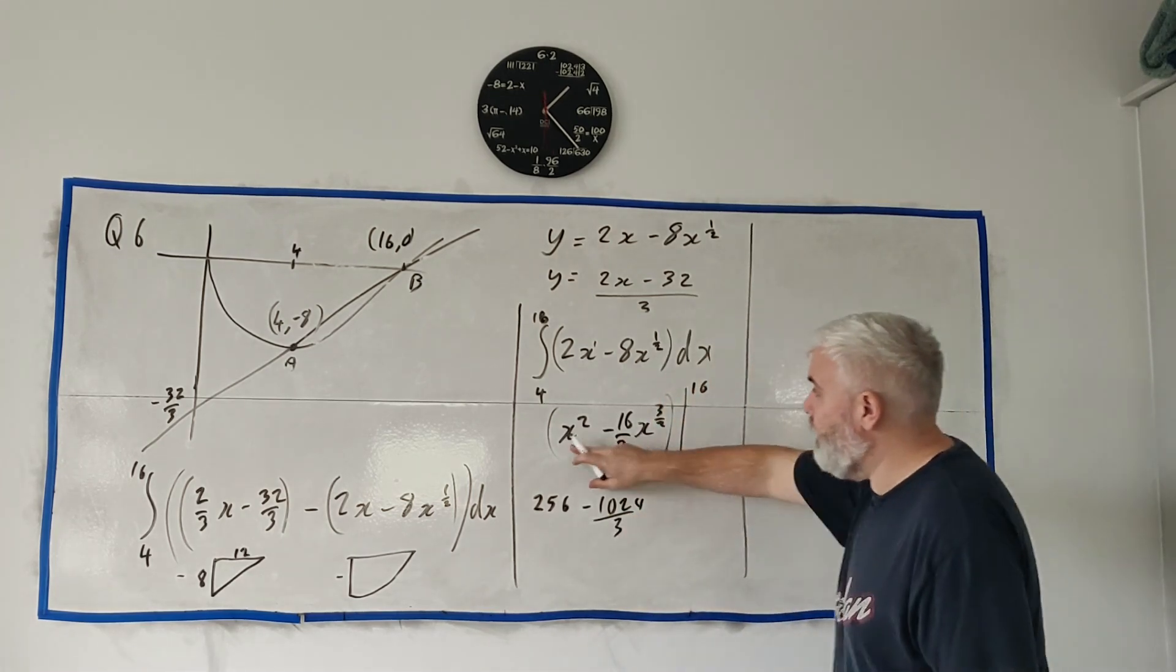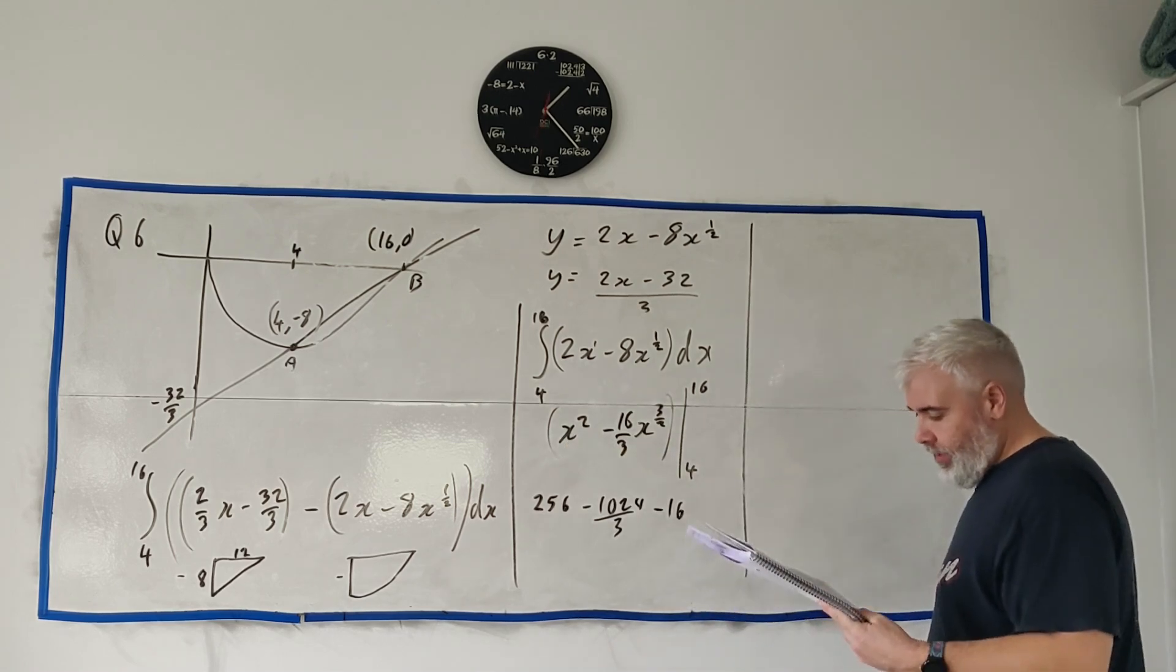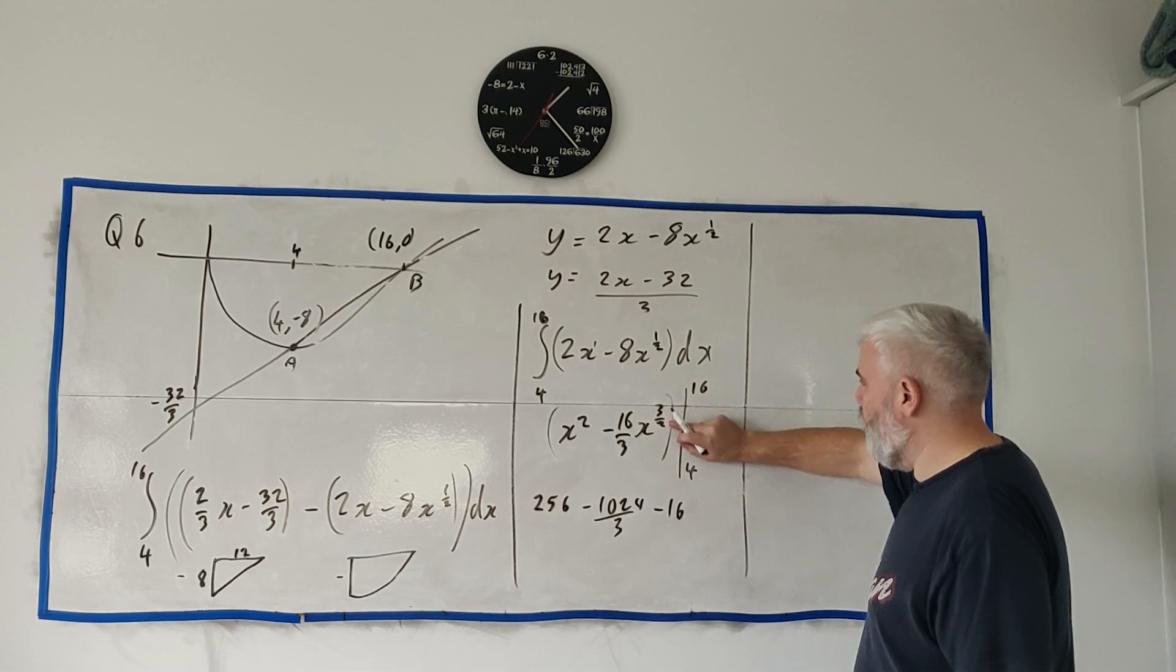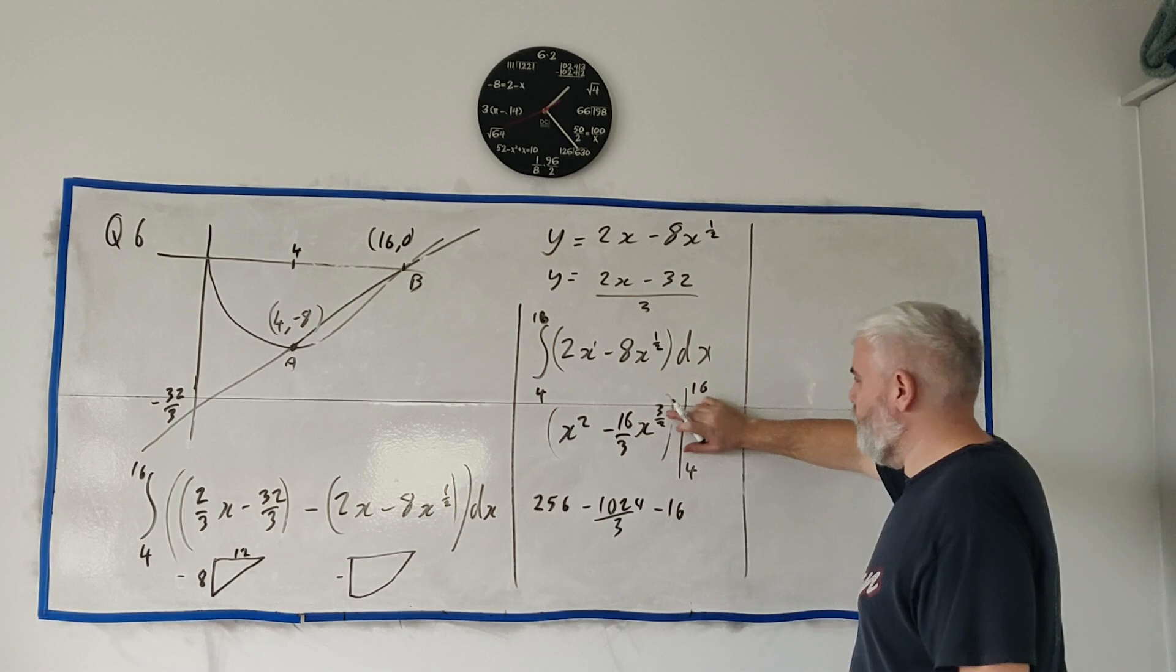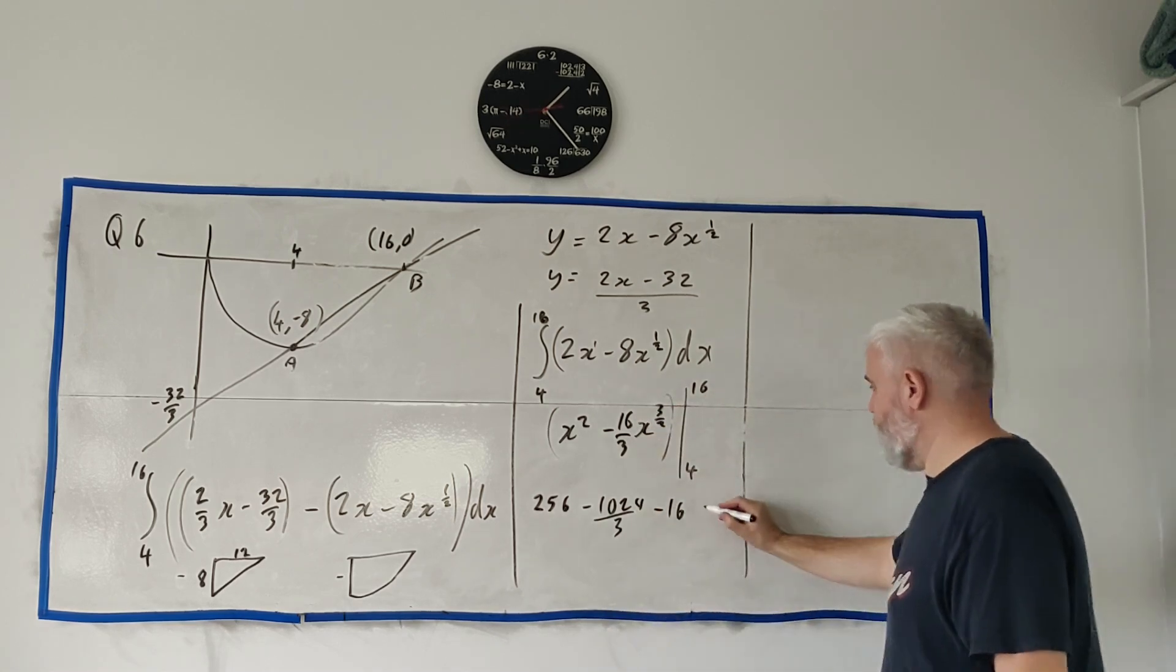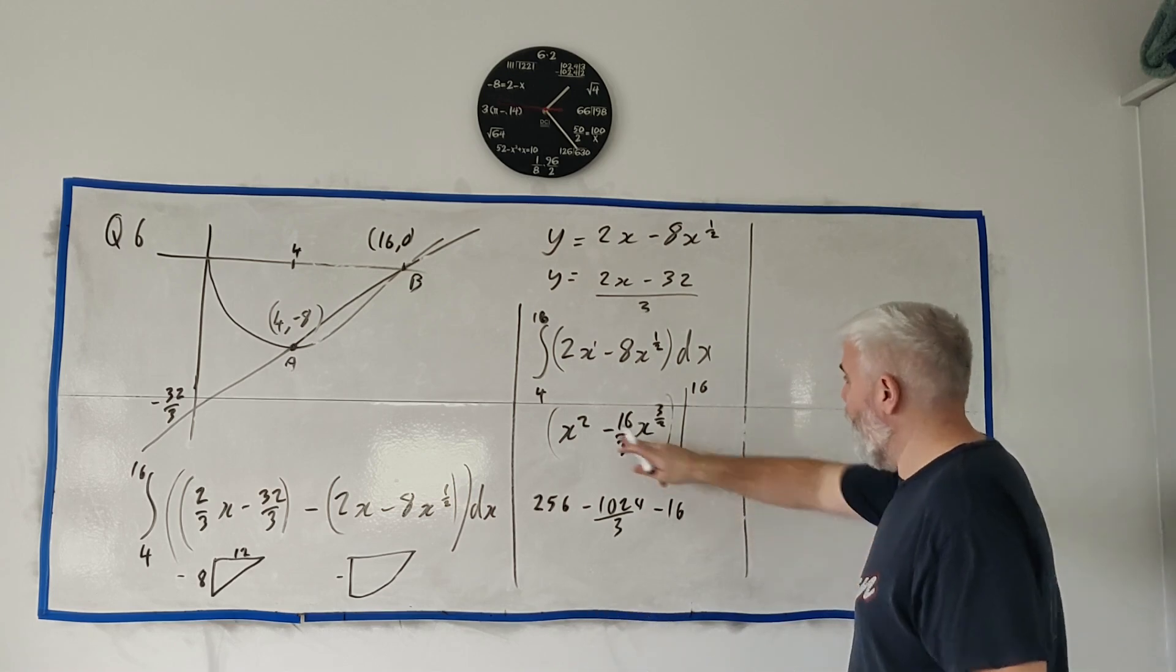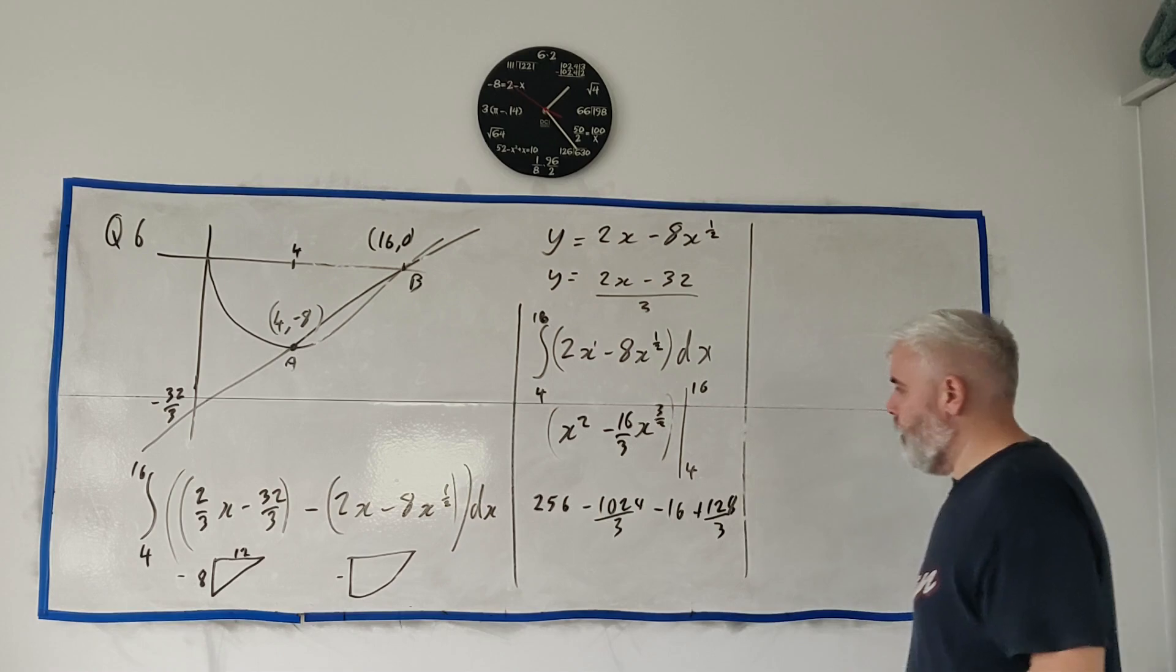And then put the 4 in and take it away. 4 squared, minus 4 squared, minus 16. And then put the 4 in here. Square root of 4 is 2. Again, your calculator does all this. Square root of 2, 2 to the power of 3 is 8. Minus minus will be a plus. 128 over 3.